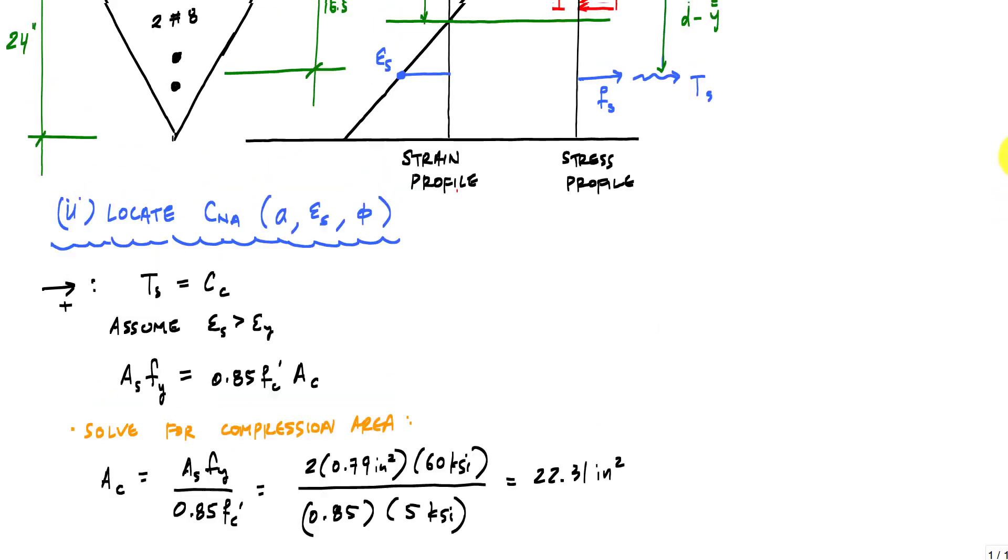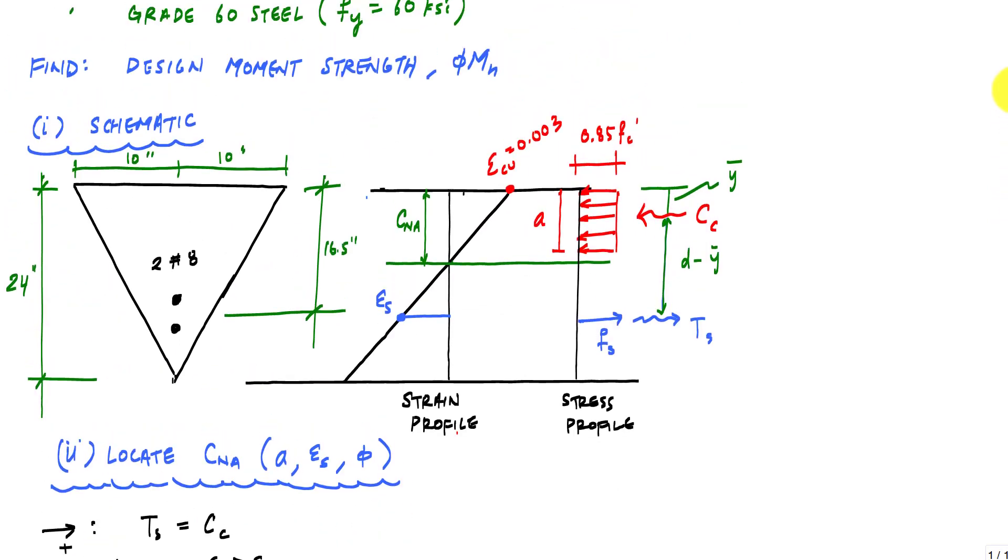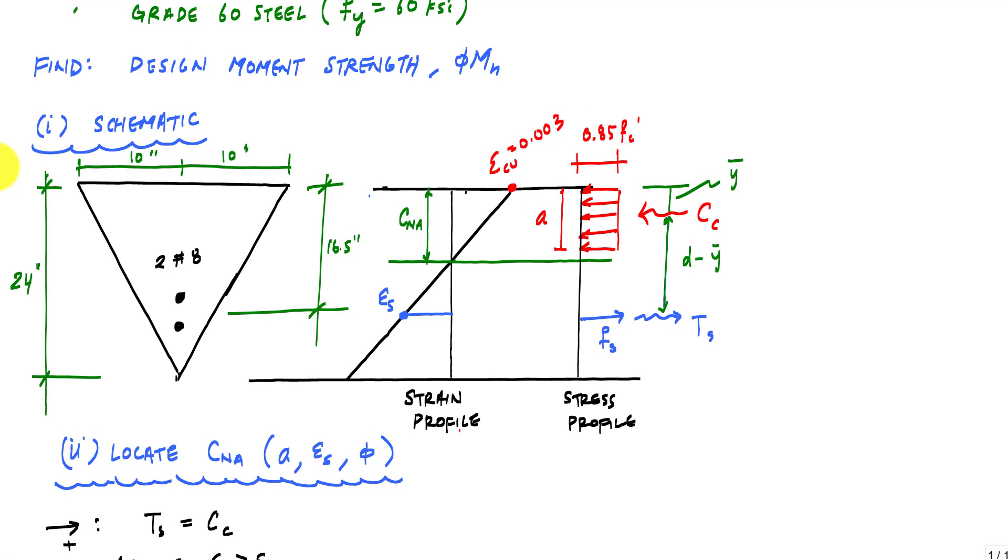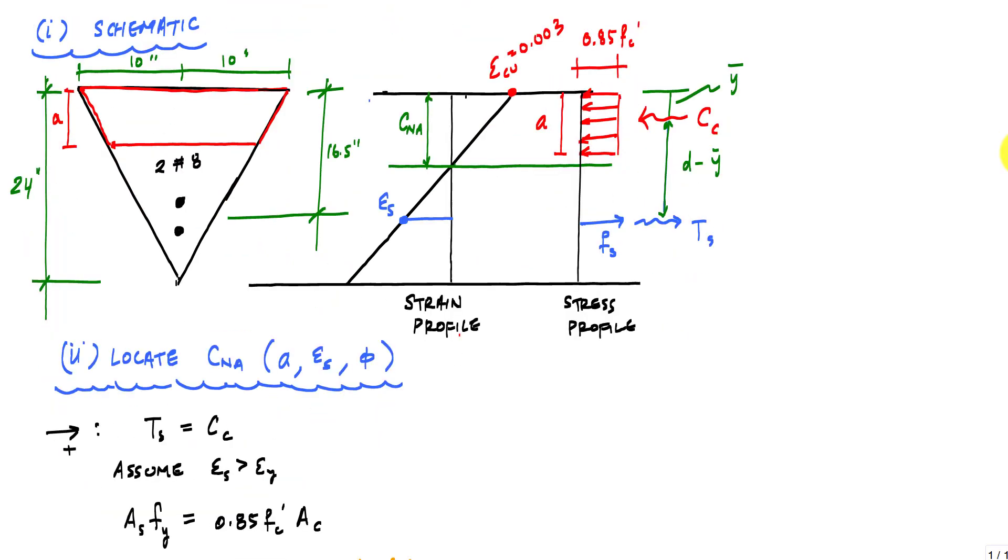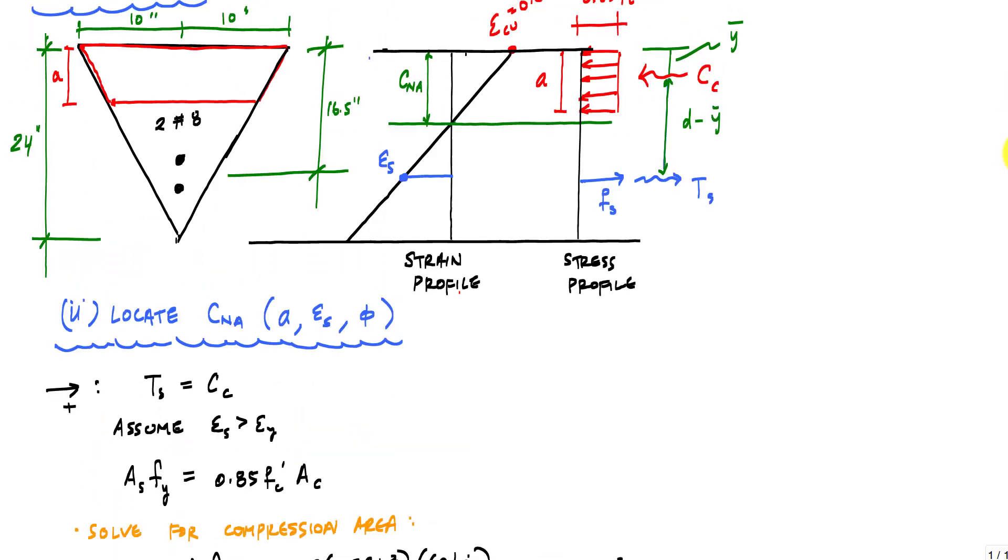So now we're going to plug and chug some numbers. So the area of tension reinforcement, two times 0.79 inches squared. The yield strength is 60 KSI divided by 0.85 and 5 KSI like this. And this will give me 22.31 inches squared. And that is the area in compression. And so now the question is, well shoot, how much of this, how far down do I go? And so if I draw a line here, I'll draw a horizontal red line for A, for the depth A here. I'll shade in the area in compression. This red outlined area is the area in compression, just like that.